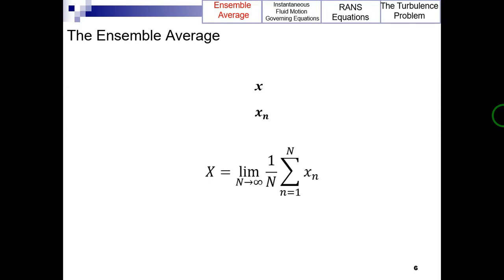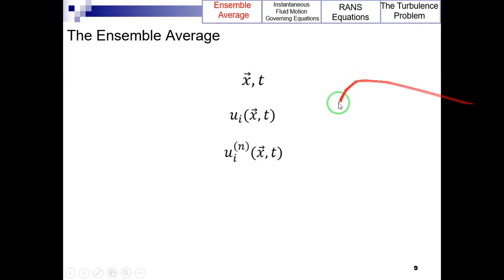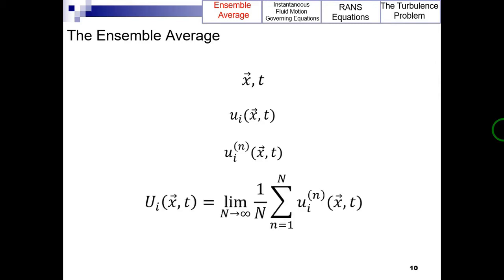For example, the velocity vector at a given point in space and time x and t in a turbulent flow can be considered to be a random variable and can be represented as u underscore i in the position x and time t as shown here. If there were a large number of identical experiments, superscript n shows the n-th realization of this velocity vector. Then, the ensemble average of these variables would be given by this equation.